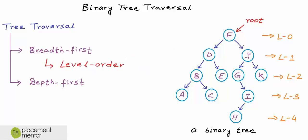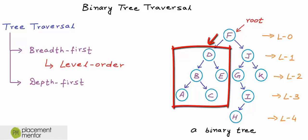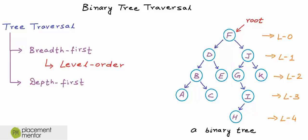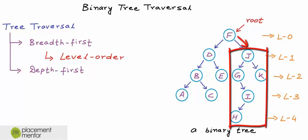In the breadth first approach, for any node we visit all its children before visiting any of its grandchildren. In this tree, first we visit F, then D, and then we do not go to any child of D like B or E along the depth — next we go to J. But in the depth first approach, if we go to a child, we complete the whole subtree of that child before going to the next child. From root F, if we go left to D, then we should visit all the nodes in the left subtree and finish all the grandchildren along this path before going to the right child J.